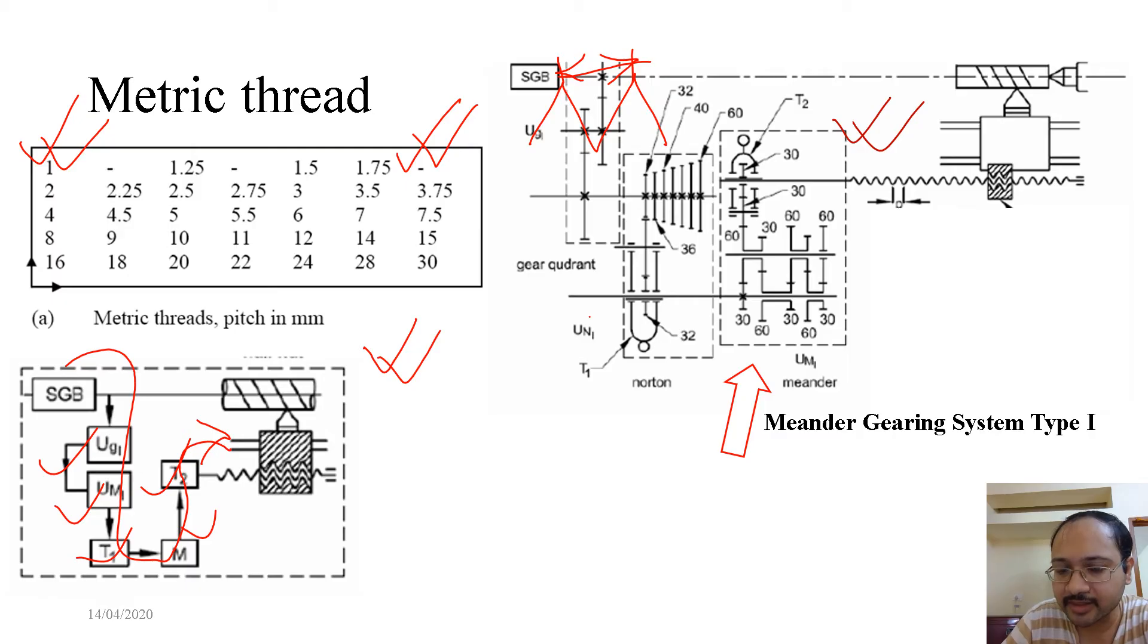That means all those four transmission ratios which are discussed in type 1 meander gearing system also apply here, and that finally gives the transmission ratio to the lead screw so that the threading operation can be done.